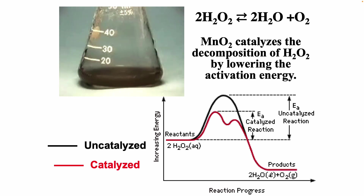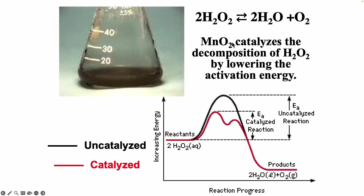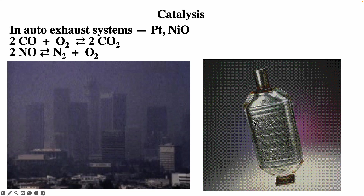Catalysts work by lowering the transition state, making the transition state more stable, and so it speeds up both the forward and reverse reaction. If we filtered this and got the manganese oxide back, we could use it over and over again because it's not consumed by the reaction. For cars, there's a catalytic converter which helps convert carbon monoxide and nitrogen monoxide into carbon dioxide, nitrogen gas, and oxygen gas.